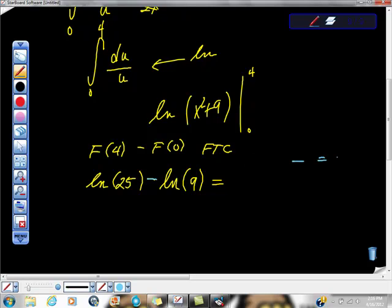So this negative sign is equal to division for us for logs, right? So we're going to do ln of 25 minus 9, so ln of 25 ninths, all right?